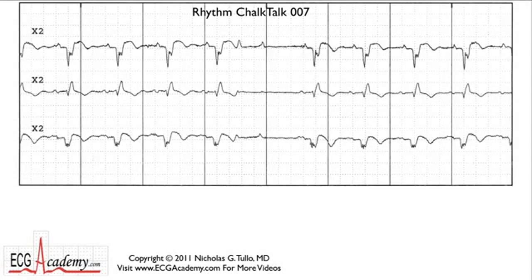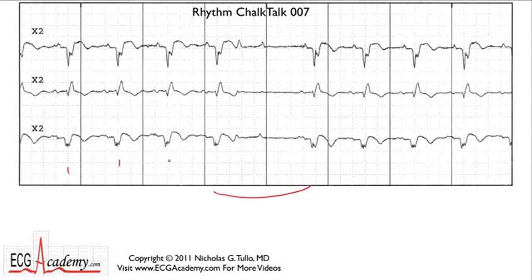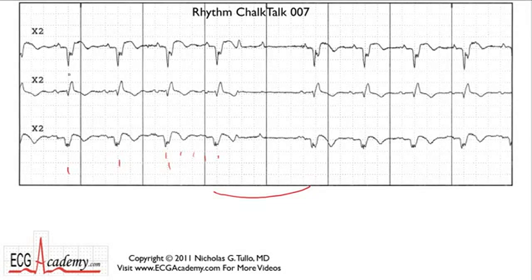This is a Holter monitor that I picked up, and it's three simultaneous leads. We're going to get started with looking at the forest, and what stands out very clearly in this strip is that there's a pause here. There seems to be a regular rhythm going along. Measuring the rate from this heavy line: 300, 150, 175 — it's just about 75 beats per minute. So we have a regular rhythm of 75 beats per minute. The QRS complex is rather wide, so it looks like a bundle branch block is going on.